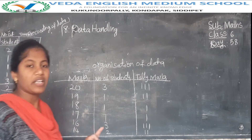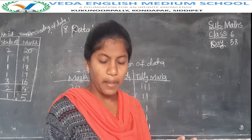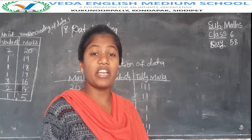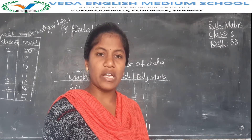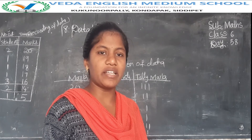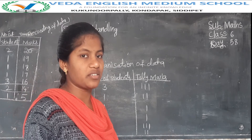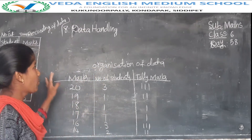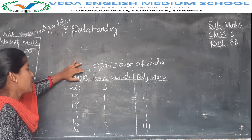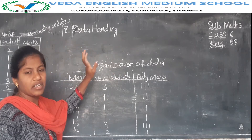Data is nothing but collecting of information for anything — either marks, or in a family, or anything else. Whether the information is in the form of words or numerical numbers, it is called collecting of data. If you collect it in the form of a box without tally marks, that is recording of data. If you use tally marks, that is organization of data.